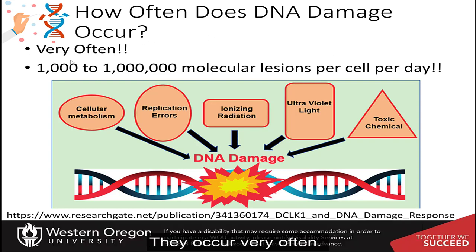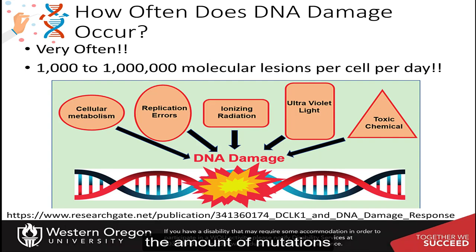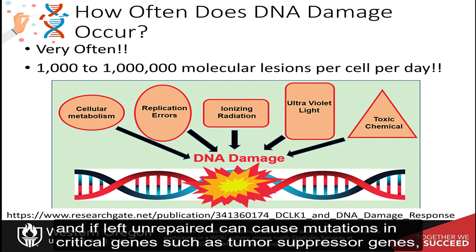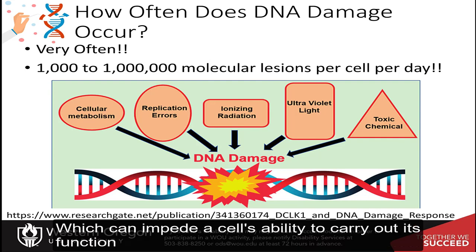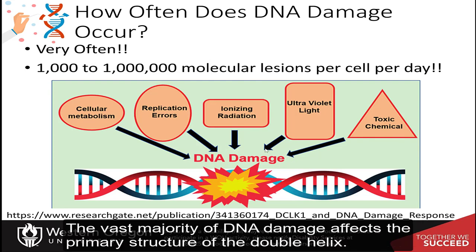They occur very often. While this constitutes only 0.000165% of the human genome, the amount of mutations that results during the day is potentially upwards of 6 billion bases, and if left unrepaired, can cause mutations in critical genes, such as tumor suppressor genes, which can impede a cell's ability to carry out its function, and appreciably increase the likelihood of tumor formation and disease states such as cancer.